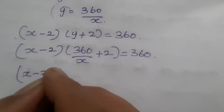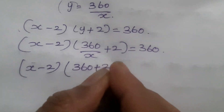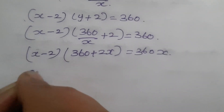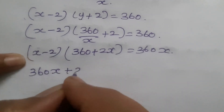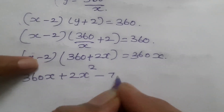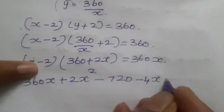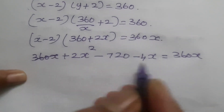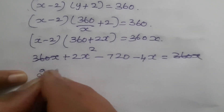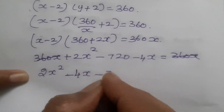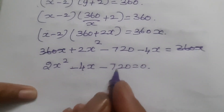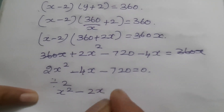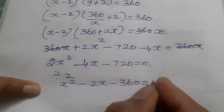X minus 2 into 360 plus 2X, taking LCM that is 360X. Multiplying out: 360X plus 2X square minus 720 minus 4X equal to 360X. So 360X and 360X get cancelled, giving 2X square minus 4X minus 720 equal to 0. We get the quadratic equation. Divide by 2, since 2 is common: X square minus 2X minus 360 equal to 0.